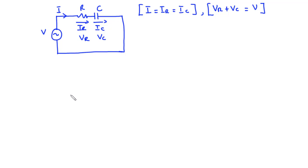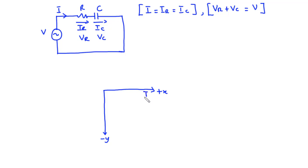Let's consider the phasor diagram of this series RC circuit. We have the positive X axis and the negative Y axis. Since the same current I flows through the two passive elements, we consider I to be the reference phasor lying on the positive X axis. For a resistor, the current is always in phase with the voltage, so the voltage VR also lies on the positive X axis, in phase with current I.